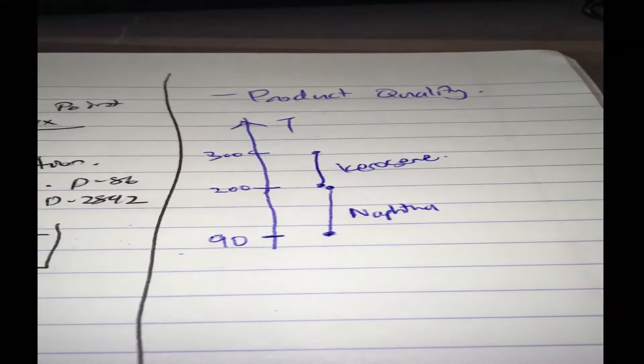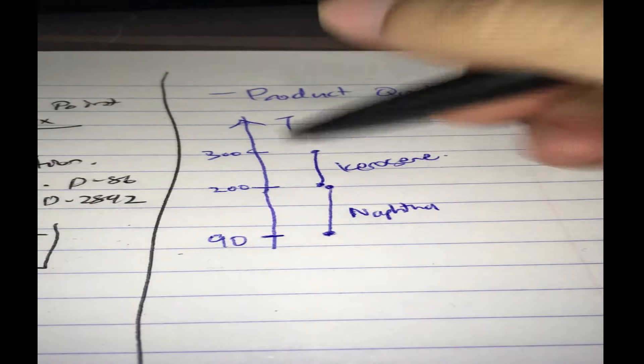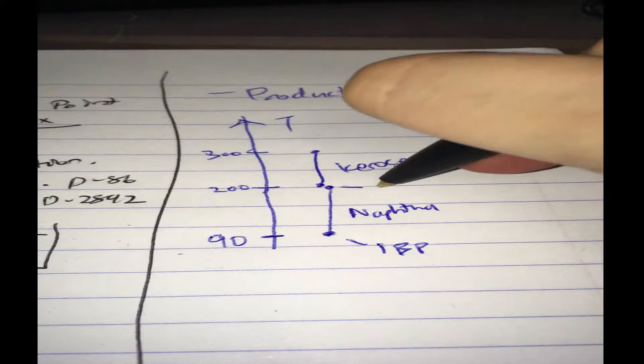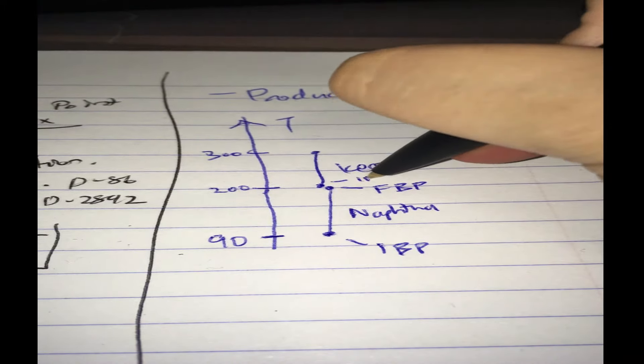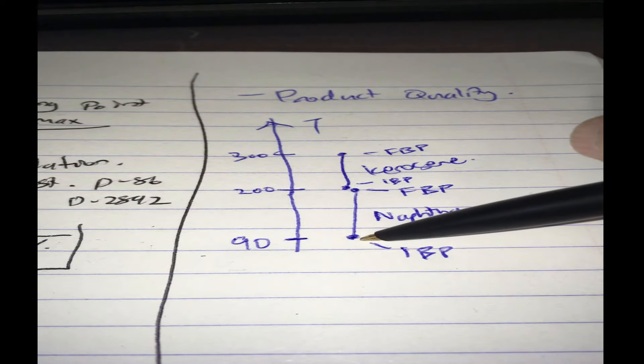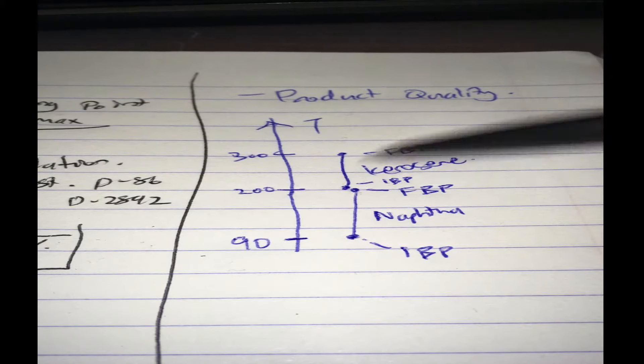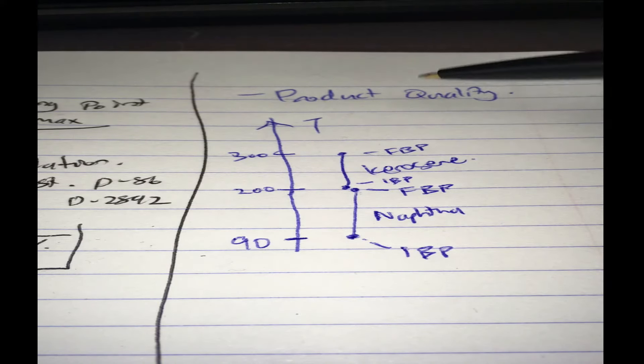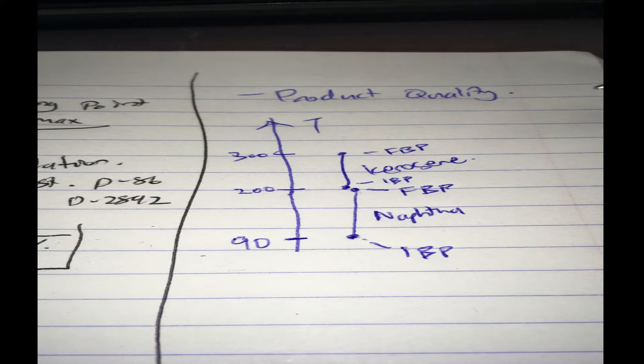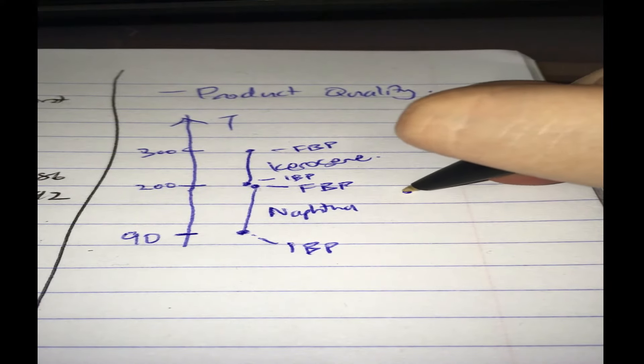Of course this is ideal when you talk about a distillation tower - the temperature, the boiling ranges. So this is the initial boiling point IBP, this is the final boiling point FBP. The same goes here, IBP and FBP. So you want to make sure where this FBP ends, the next IBP starts. So the final boiling point of naphtha should be 200 and the initial boiling point of kerosene could be 200. That is of course ideal and that tells you yes, the separation is very good. There's no temperature overlap in that sense, but in reality it's not always like that.